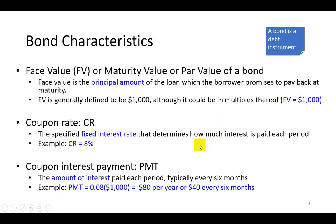In the case of a bond, there are a few specific characteristics we should want to know. First, remember that a bond is a fixed income debt instrument. What this means is that it is a debt instrument that pays a fixed amount of interest each period. So, if you lend a hundred bucks at five percent, then every period you're going to get five percent on a hundred, which is five bucks. The period could be monthly, quarterly, semi-annually, or annually.